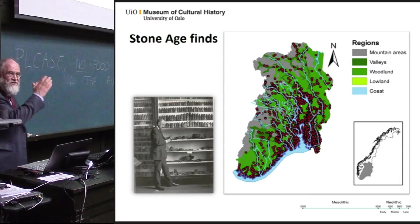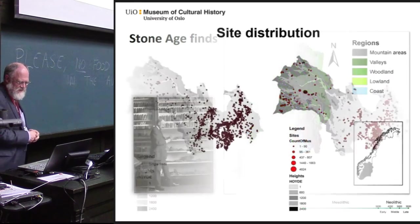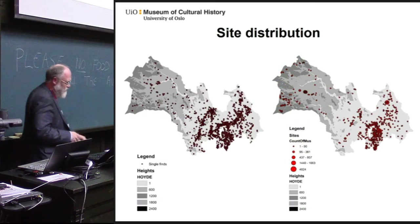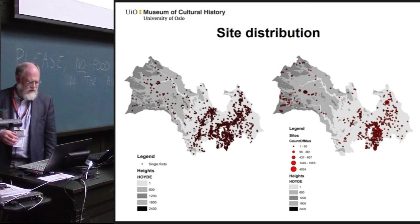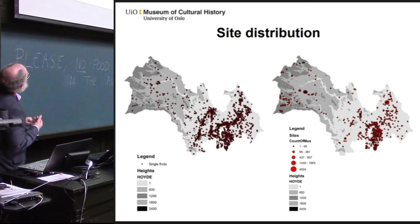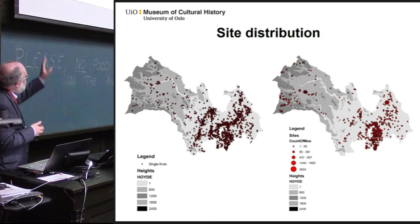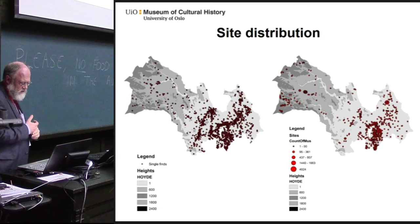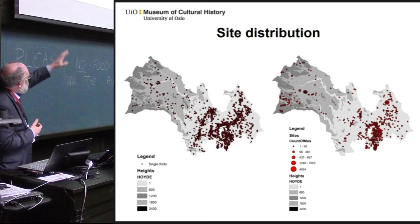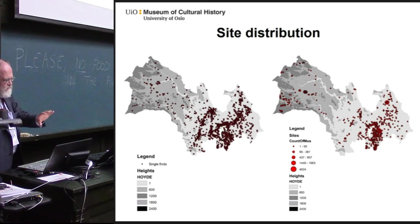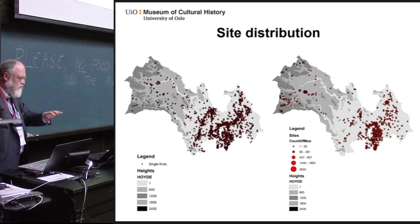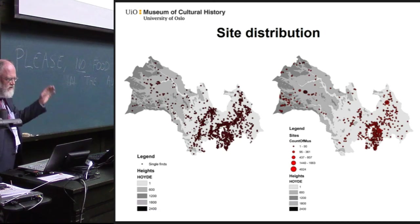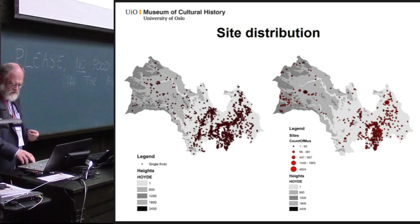Luckily, he was able to complete the first exhibition before the Viking ship took all his attention. Here is the site distribution mapped on different height levels. On the left you have the single finds that we worked with earlier, and on the right side you have the sites, in five different size classes by number of objects on each site. One can see that there is a great concentration around the Oslo Fjord, and the finds are more or less thinly but evenly distributed up in the higher areas, with a clear difference between the single finds and site distribution.